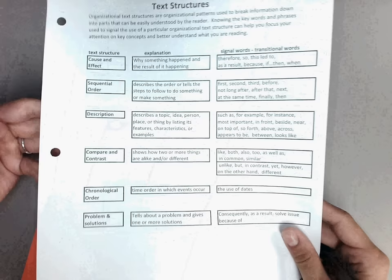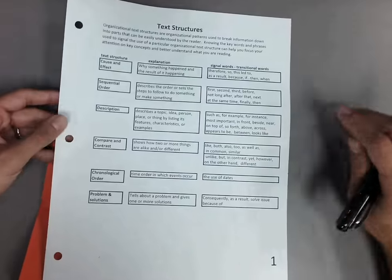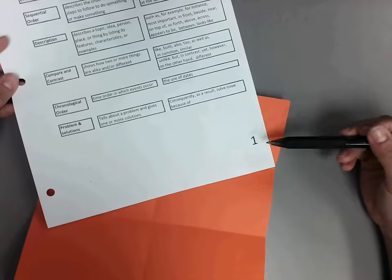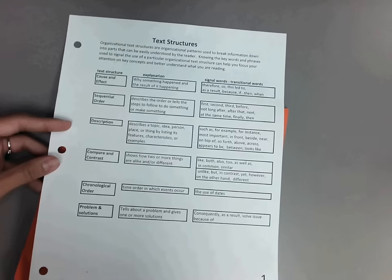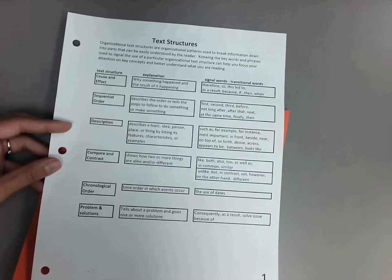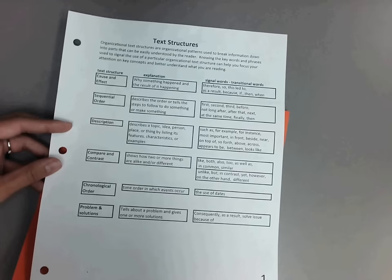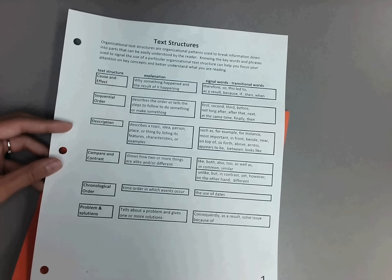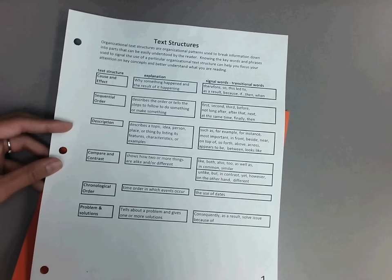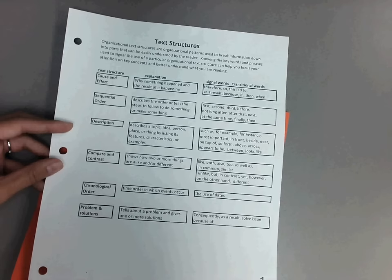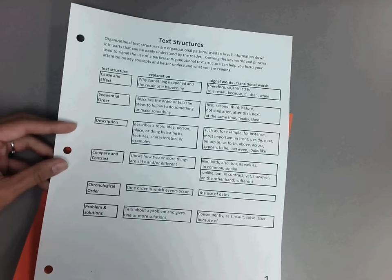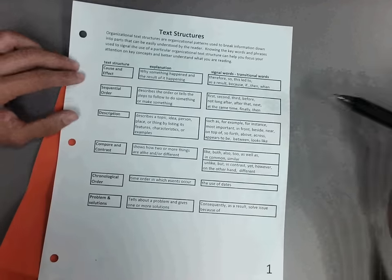Okay, you're going to take your study guide, which we put in your folder. It is page one. It says text structures at the top. It gives information about organizational text structures or organizational patterns used to break information down into parts that can be easily understood by the reader. Knowing the key words and phrases used to signal the use of a particular organizational text structure can help you focus your attention on key concepts and better understand what you are reading. So we have six different text structures.